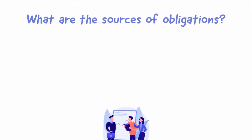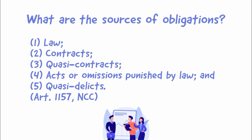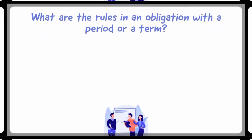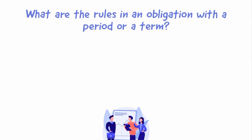What are the sources of obligations? The sources of obligations are the following: 1) law, 2) contracts, 3) quasi-contracts, 4) acts or omissions punished by law, and 5) quasi-delicts.